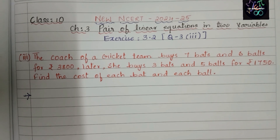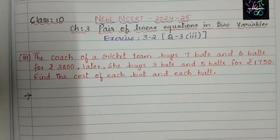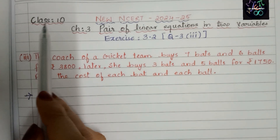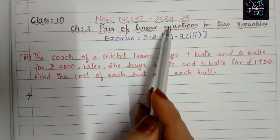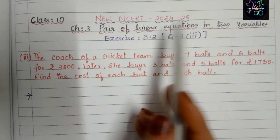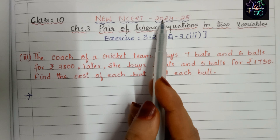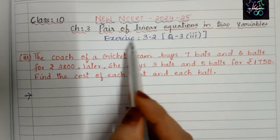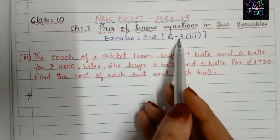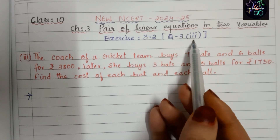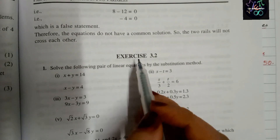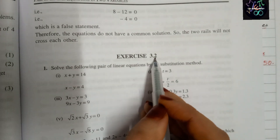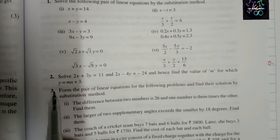Assalamu alaikum, hello everyone, welcome back to my channel The Maths Board. Today I am here with Class 10 Chapter 3, Pair of Linear Equations in Two Variables, from the new NCERT textbook, Exercise 3.2, Question number 3. Let me show you in the textbook which question we are going to solve — Exercise 3.2, third question.